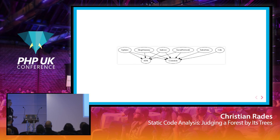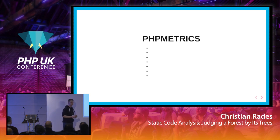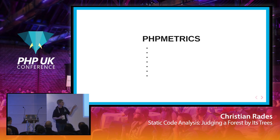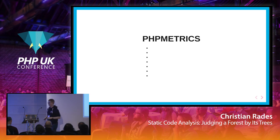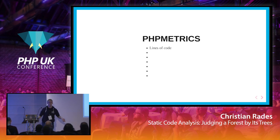The next tool is PHP Metrics. It has quite a large amount of features. It can output simple things like lines of code — something you could do with a 30-year-old Unix command — but also much more.